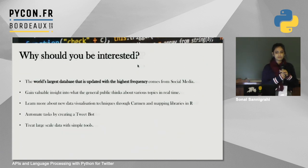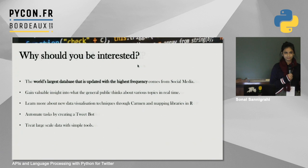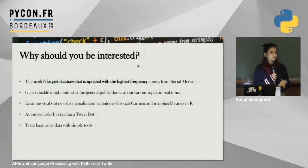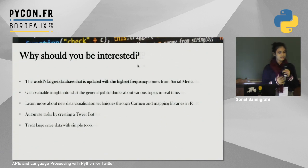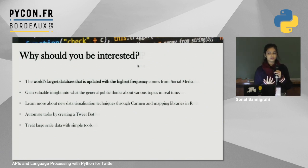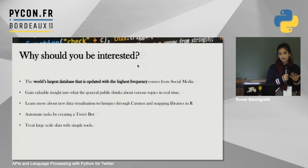Now I'll talk about why you should be interested in this. The world's largest database updated with the highest frequency is social media. Specifically with Twitter, you see real-time updates on what people think about any given topic at any time. Whether it's the Amazon fires or the Hong Kong protests, social media is a great place to look. You also get opinions from all over the world — not just the country being affected, but outsider opinions as well — giving you valuable insight into what the general public thinks in real time.